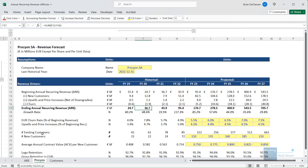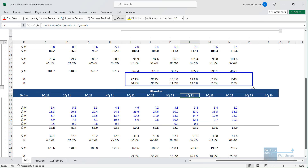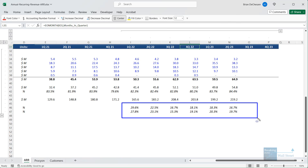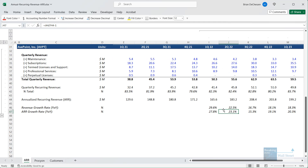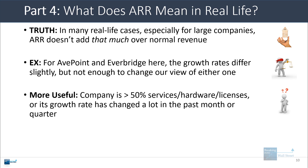If you go back to the ARR numbers here for Everbridge and Avopoint, yes, there are some differences and we get slightly different growth rates. Some of these companies look better on an ARR basis, some look better on a total revenue basis, but these percentages are not really that much different. So yes, the growth rates differ slightly, but it's not really enough to change our view of either company in this case. I would say that ARR is actually most useful if the company has a whole lot more in non-recurring revenue or its growth rate has changed a lot in the past month or quarter because it's a high growth startup. In those cases, ARR is quite useful, but for large companies growing at 10, 15, 20% per year, it is not necessarily that big a deal, even though people who are very much into the SaaS sector will try to tell you that it is the one metric to rule them all.